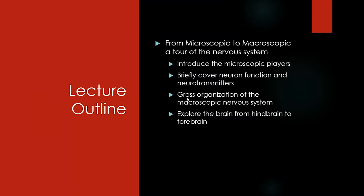Today's lecture is going to be a tour of the whole nervous system. We're going to start small, in the microscopic world, which is probably a lot of review since most of you have taken biopsych. We'll work up from that microscopic layer to the gross organization of the nervous system — how it's set up to collect information and where that information flows. We're going to look from the back to the top, starting with older structures involved in physiological needs, then working up to higher cognitive functioning like the cortex.